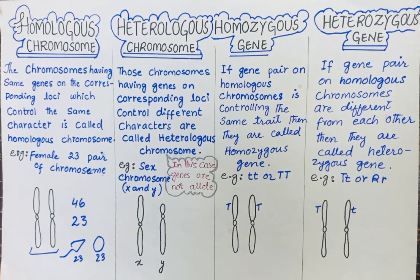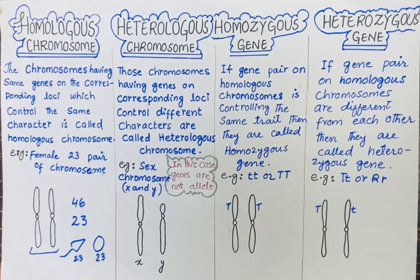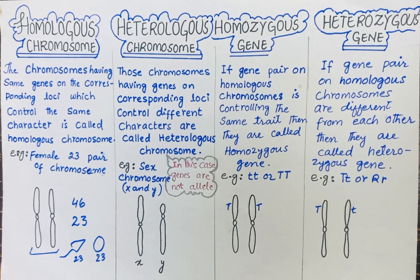To make this explanation easier, homologous chromosomes means the chromosomes that are found in pairs — one chromosome of the pair comes from the mother's side and the other comes from the father's side. When these two chromosomes come together, they form a pair, and this pair is called homologous chromosomes.